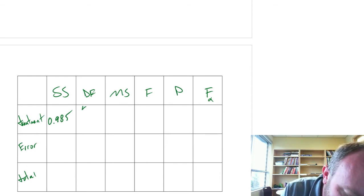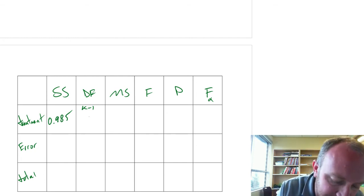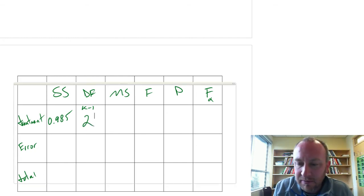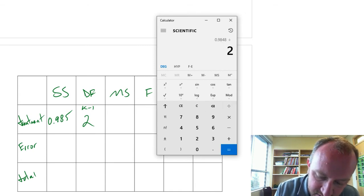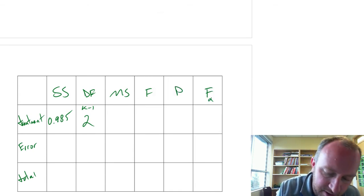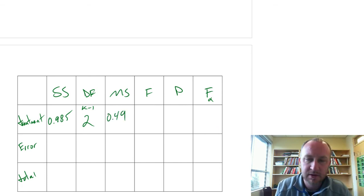Mean square treatment is 0.985, divided by 2, 0.49.